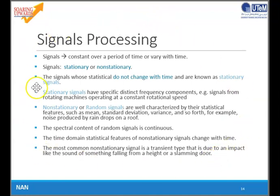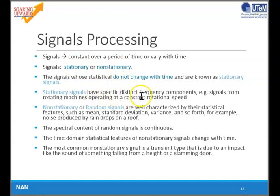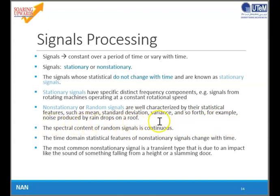Next is signal processing and signal analysis. A signal can be constant over a period of time or vary with time. There are two types of signal: stationary and non-stationary. Stationary signals have specific distinct frequency components — for example, a signal from a rotating machine operating at constant rotational speed. Non-stationary, or random, signals are characterized by statistical features such as mean, standard deviation, variance, skewness, kurtosis, and so on. An example is noise produced by raindrops or road surface of a highway.